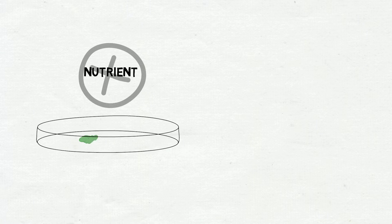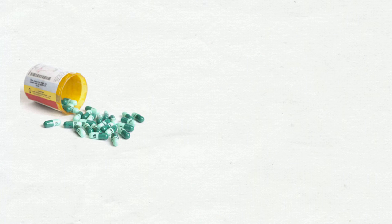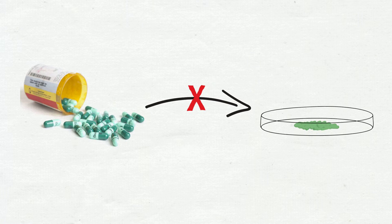Somaya postulates that nutrient-limiting petri dishes are more reflective of the conditions inside a living organism than nutrient-rich petri dishes. Most current classes of antibiotics inhibit the growth of bacteria on nutrient-rich media.